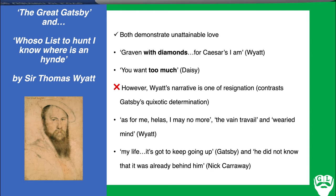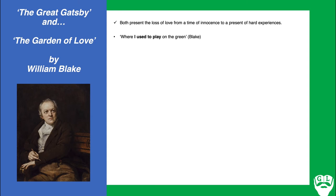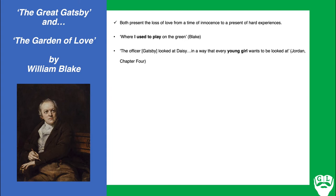The second poem is 'The Garden of Love' by William Blake compared to The Great Gatsby. Both texts present a loss of love from a time of innocence to a present of hard experience — both voices come out damaged beyond repair. Blake comments on how he 'used to play on the green,' this past tense giving a sense of an idyllic past, of love seen through natural imagery. We see this also in Jordan's description of the officer Gatsby, who looked at Daisy in a way that every young girl wants to be looked at. Both elements of love are forged from a past where our narrative perspective no longer exists.